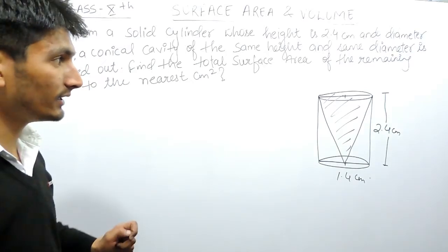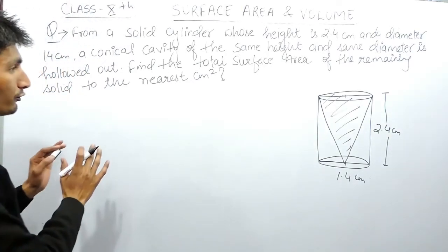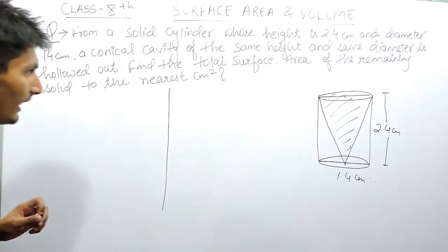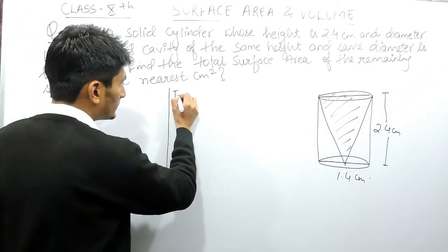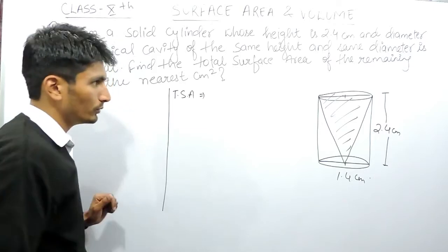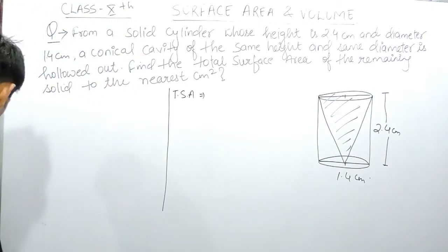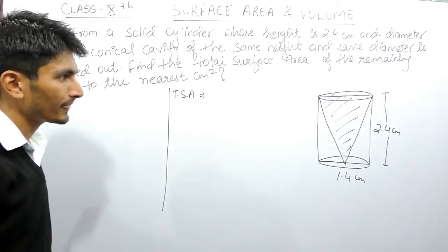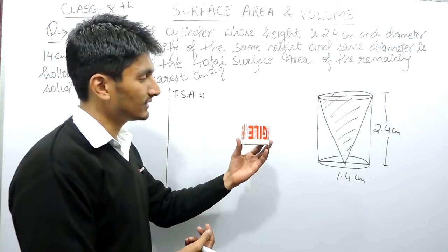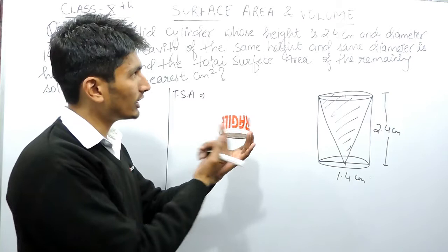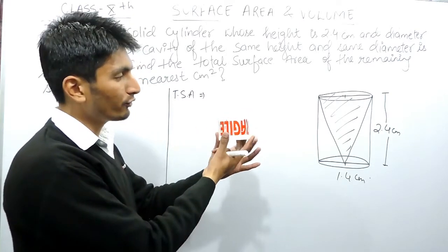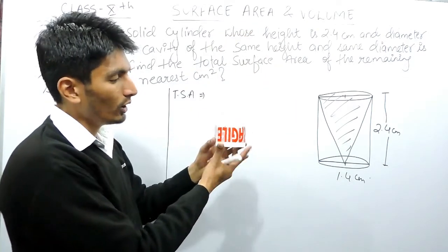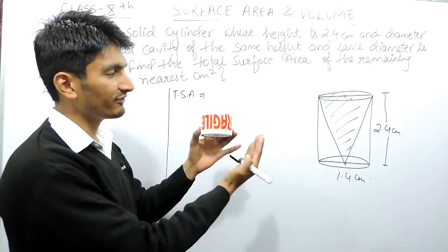One important thing is that you first have to form the formula to find the total surface area. The total surface area basically means every surface which is visible to you will be included. Think of this as a cellotape in the shape of a cylinder, and from inside a conical cavity has been taken out. So what are the surface areas visible to you?